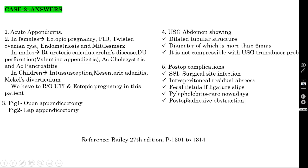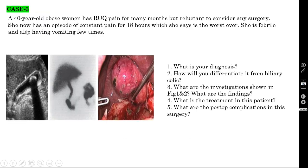Pylephlebitis is rare nowadays because we use very high broad-spectrum antibiotics, so this complication is not that common. Case number three: a 40-year-old obese woman has right upper quadrant pain for many months but was reluctant to consider surgery. She now has a constant pain episode for 18 hours which she says is the worst ever. She is febrile and also vomiting a few times.